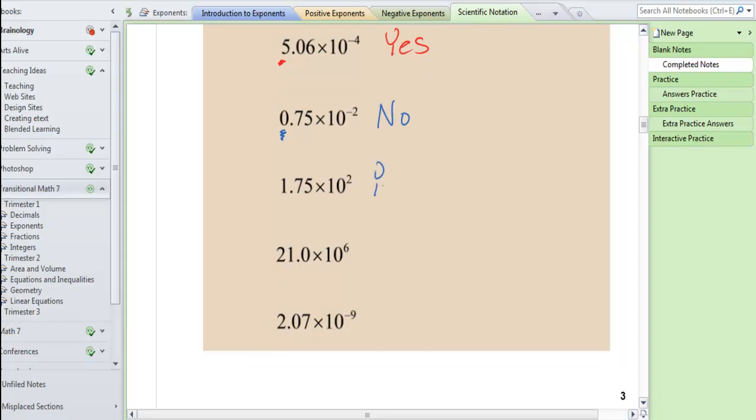The next one is yes because we have one digit to the left of the decimal. The next answer is no. We have two digits to the left of the decimal so that doesn't work. And then the last problem is yes. We have one digit to the left of the decimal so that does work.